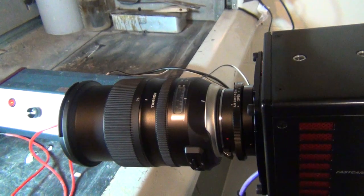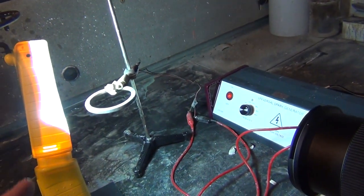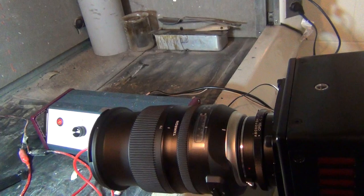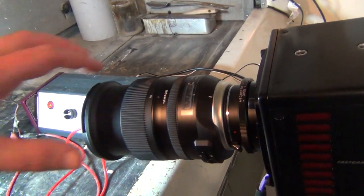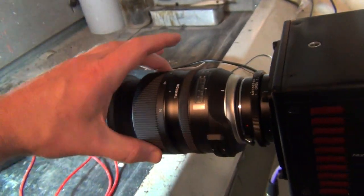Typically with a spark that small I would use a macro lens and have the lens closer, but I wanted to be able to show a manual zoom lens.